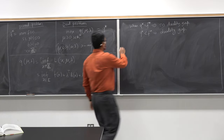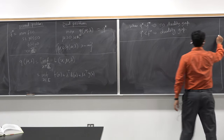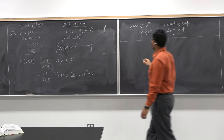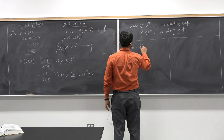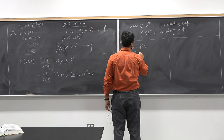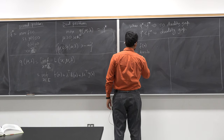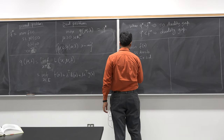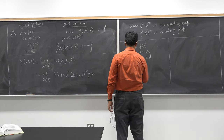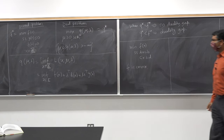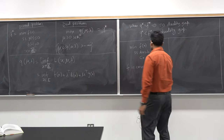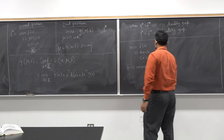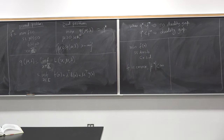Let's look at two situations when there is no duality gap. The first situation: I want to minimize f of x such that Ax equals b, Cx less than or equal to b, and f is convex. In this case, f is convex and f star is finite. So if your problem has a solution and f is convex, then there is no duality gap.